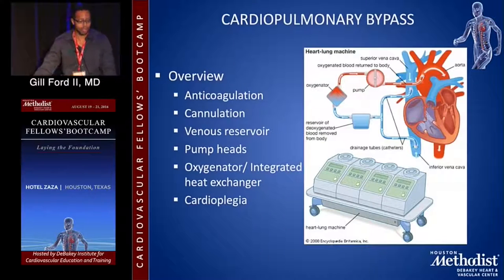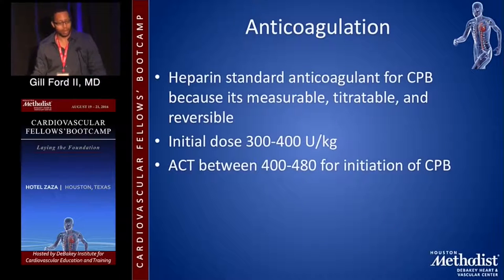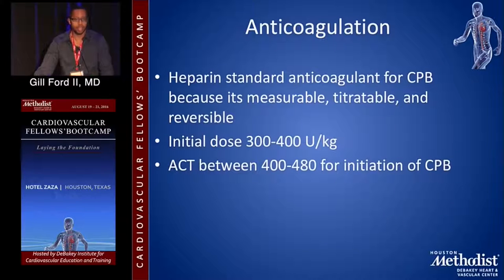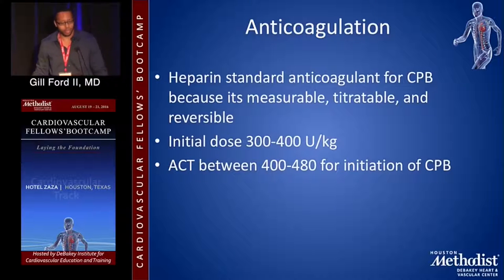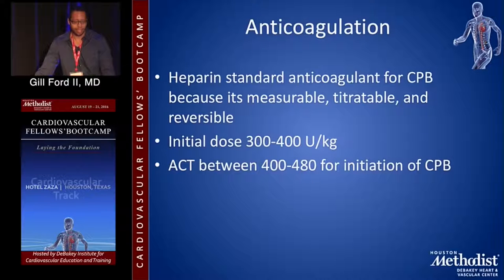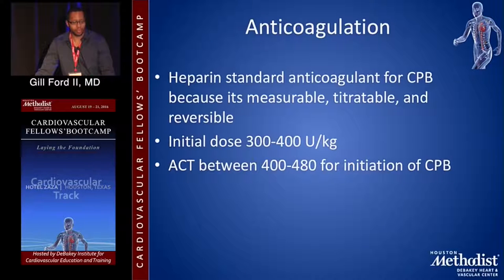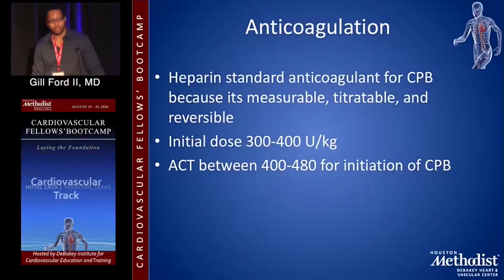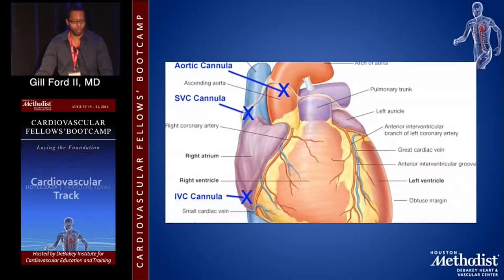Here's a quick overview of what we're going to cover. Prior to going on cardiopulmonary bypass, the first thing is obtaining adequate anticoagulation. We want an ACT of around 300 to 480 seconds, and we give 300 to 400 units per kilo of heparin to achieve that. The reason we use heparin is because it's titratable, measurable, and reversible — very easy and common to use.